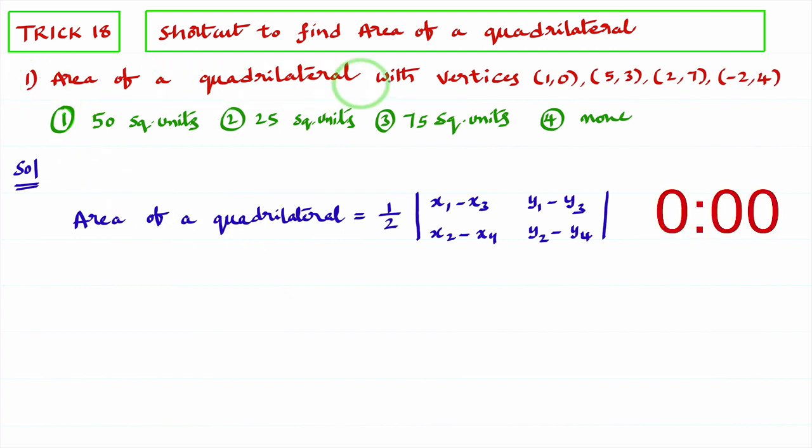Now you observe the question area of quadrilateral with vertices. First, I will consider given vertices. What are the given vertices? 1,0, 5,3, 2,7, minus 2,4. You consider first vertex as x1 y1, second vertex as x2 y2, third vertex as x3 y3, fourth vertex as x4 y4.